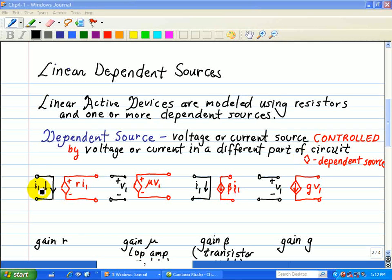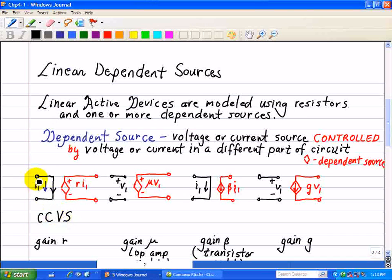Here's one where we have a current at our input. This is a current controlled voltage source—our input is current and the output is voltage. The output voltage source is controlled by an input current source.